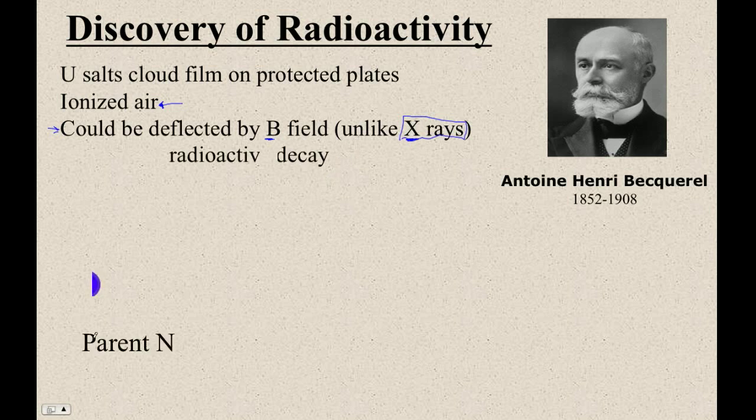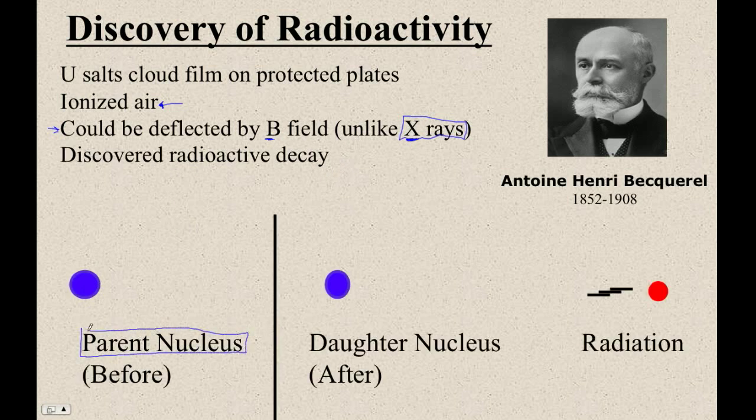And then this is the nomenclature we talk about. The parent nucleus is the thing that is what it is before it decays. Then we talk about the daughter and the radiation. And presumably this can have some energy. It could be moving as a result of the energy loss.